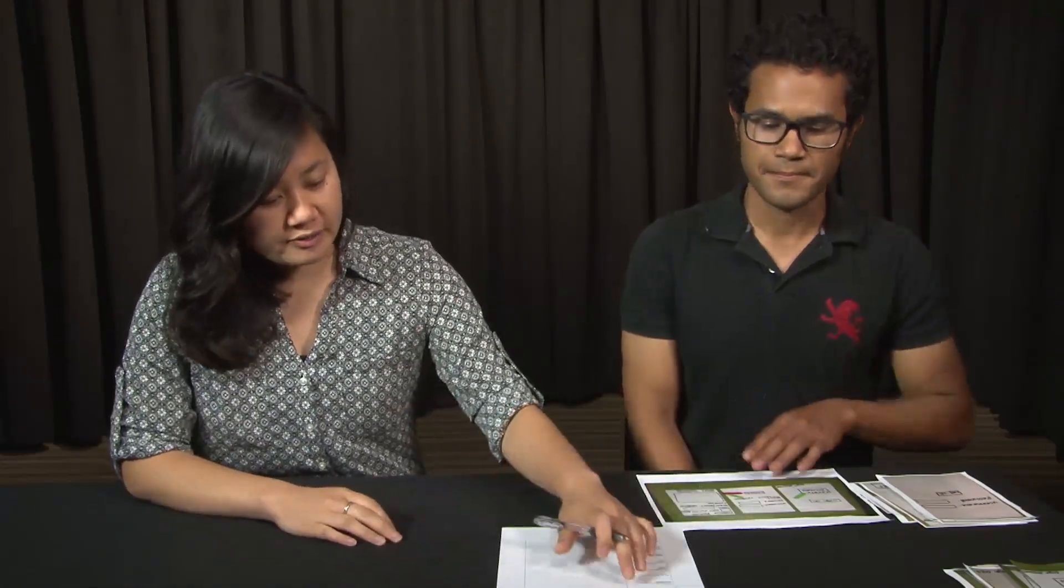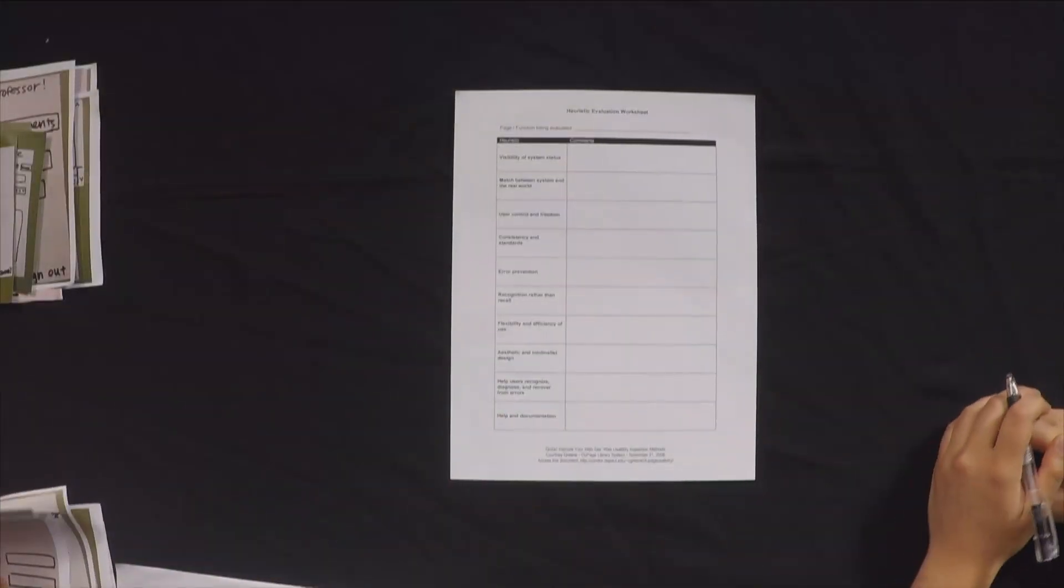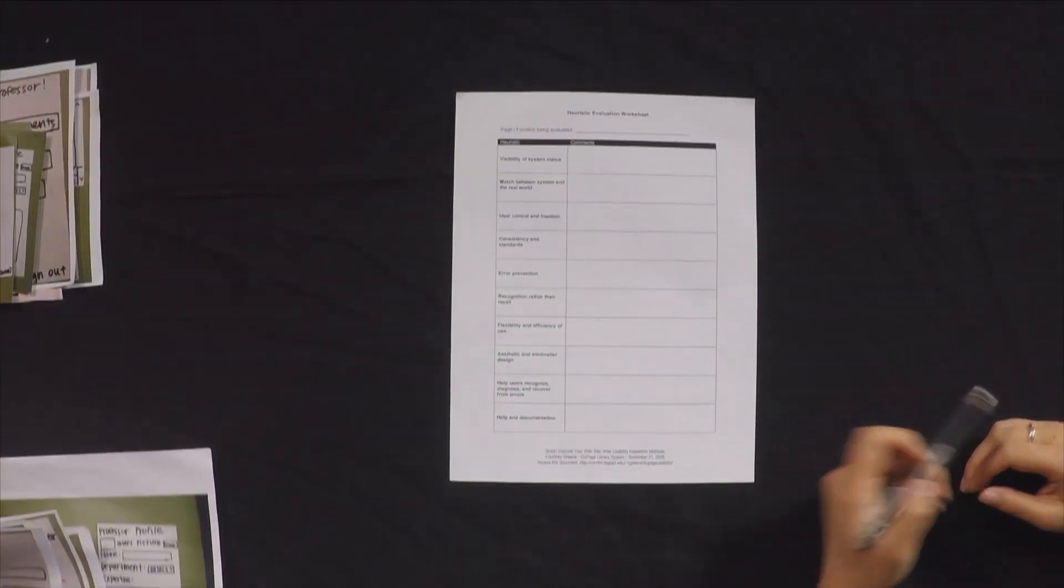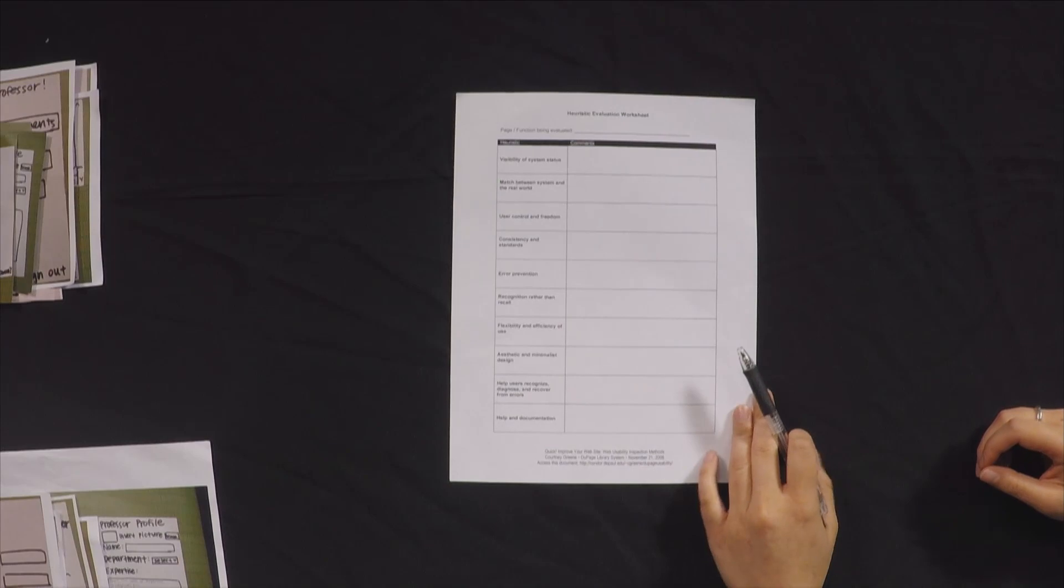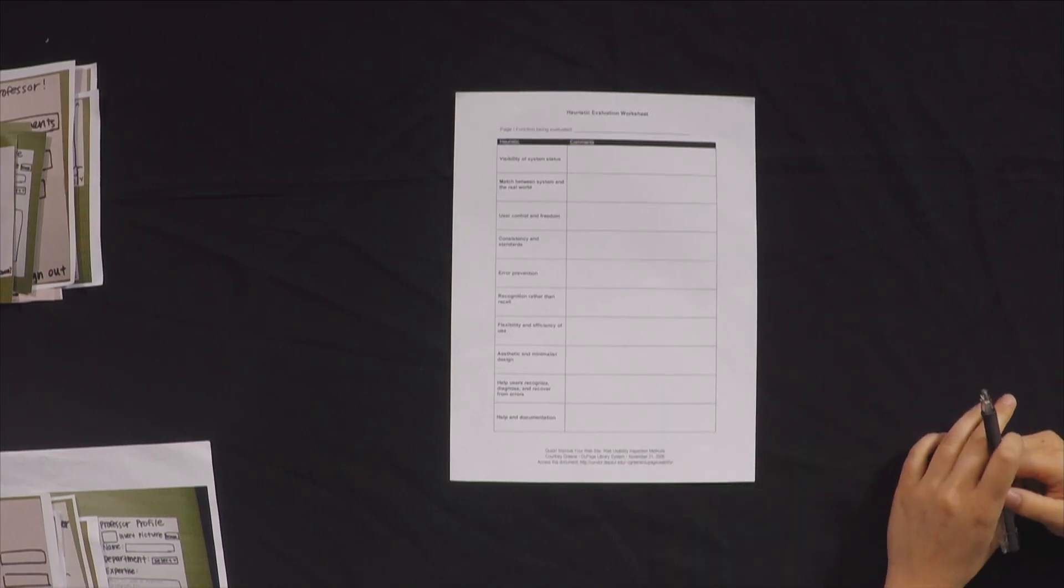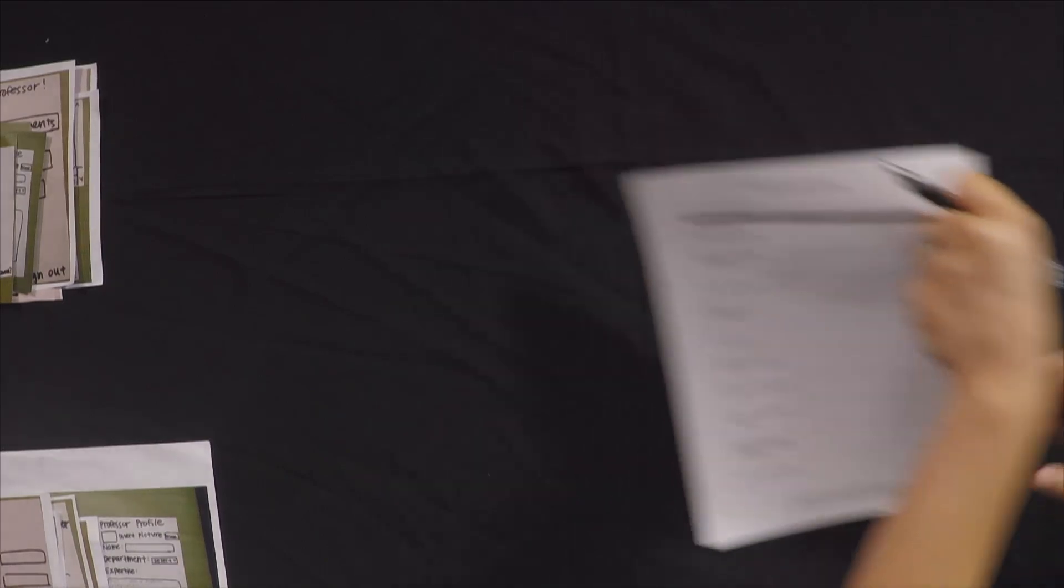So I also printed out a worksheet with all ten heuristics on them. This will make it easier for me to find usability problems and note them down quickly. You can make your own online. So let's get started.